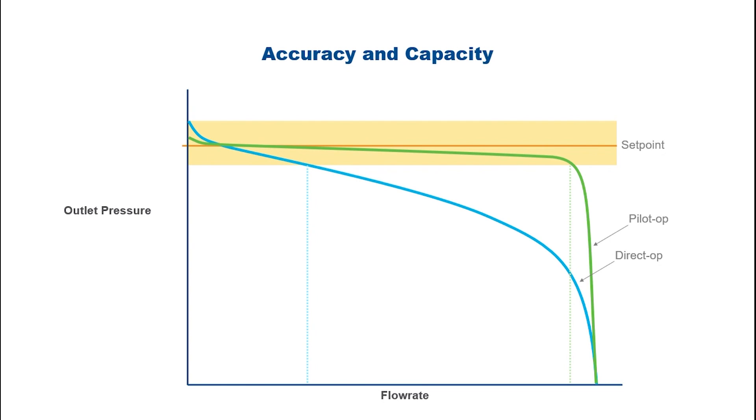Accuracy constraints for a potential application are depicted as a light orange box, showing that for the same accuracy, the flow capability of a pilot-operated regulator is several times more than the spring-loaded.